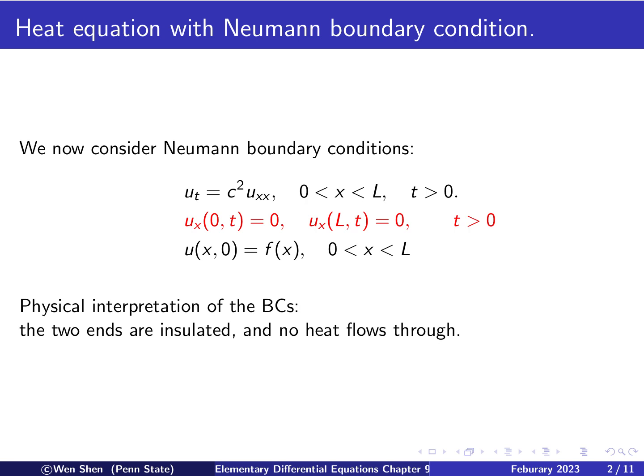So what is the physical meaning of this condition? So this condition basically says the temperature change, the gradient of the temperature in the x direction at the boundary point is 0. Here is at the 0, here is at the other end at L.